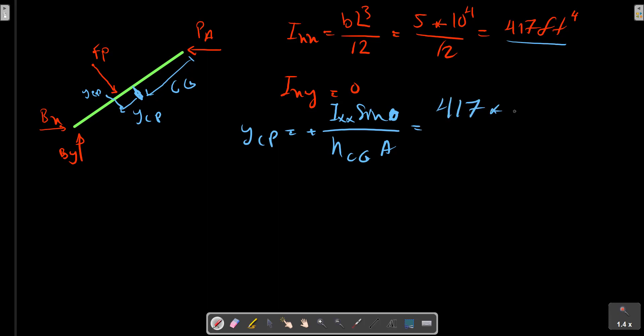We now calculate. 4170 multiply sine theta. Sine theta is 6, 8, 10. Sine theta equals to 6 on 10. hcg we calculated before, 12, multiply by A which was 50 square feet. ycp equals to one foot.